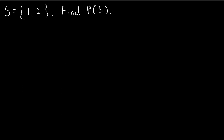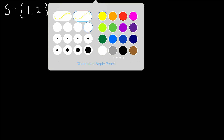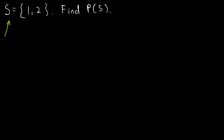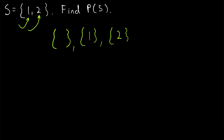Moving on to the next one, where we've got two elements in our set S. We just have to list the subsets. Start off with the empty set, because that's a subset of every set. This set contains one and two. The set that contains just one is a subset of S. The set that contains just two is a subset of S. And the set that contains one and two is a subset of S as well — that, of course, is S itself.